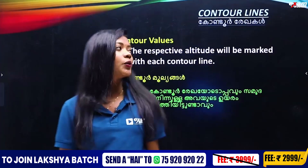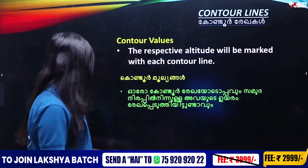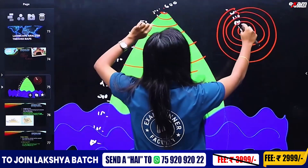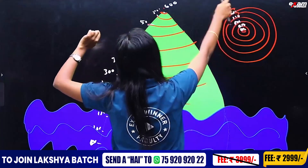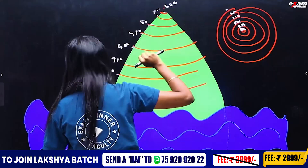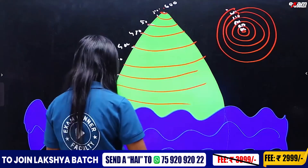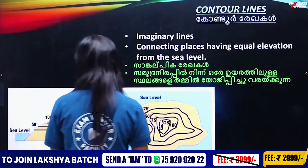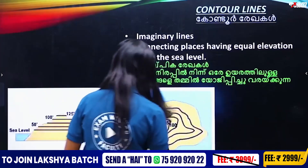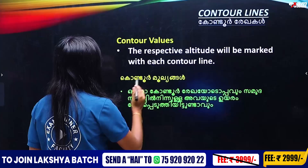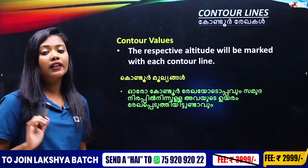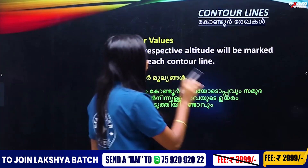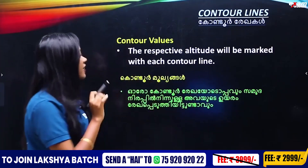Contour lines are not just numbers. We have to give numbers to each contour line. For example, this is 600, here is 50. Those numbers are called contour values. What do we call those numbers? Contour values — because here we call them 100, 100, 50. The respective altitude will be marked with its contour line — that is the contour value.